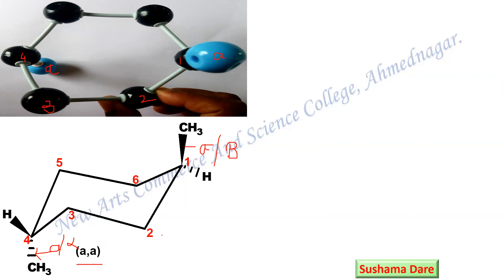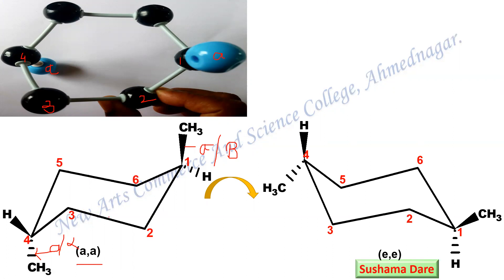Once you complete one conformer, always remember you have to go for the flipping of this ring. So after flipping, what are the changes? This portion goes in the downward direction and this portion goes in the upper direction — number 1 is at the lower side, number 4 is at the upper direction. During flipping, axial changes to equatorial and this axial again changes to equatorial. So both axial groups change to equatorial, and this is the EE conformer.